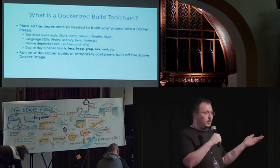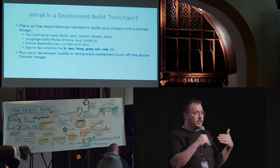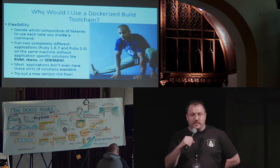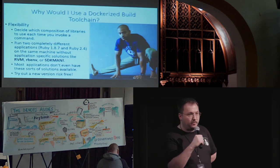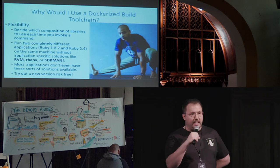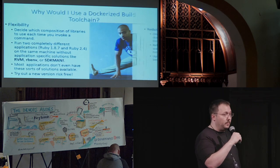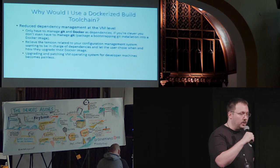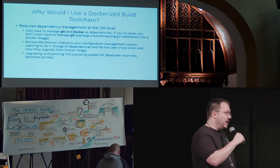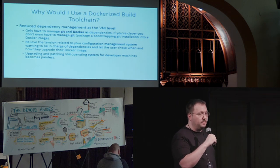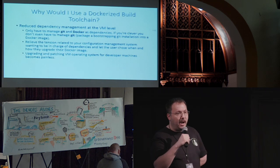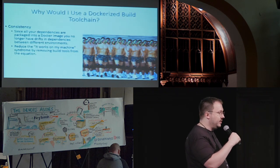So that when your developers are building their product, they're not relying on what's on their VM — they're relying on what's inside the Docker container. Why would you do that? One reason is flexibility. If you've ever tried to manage multiple versions of Ruby or Groovy, you'll find it's quite difficult. Not every application has a version management tool, so Docker lets you package those up in an agnostic way. It also lets you reduce your dependency management at the VM level, providing dependencies as a Docker image so developers can get going immediately.